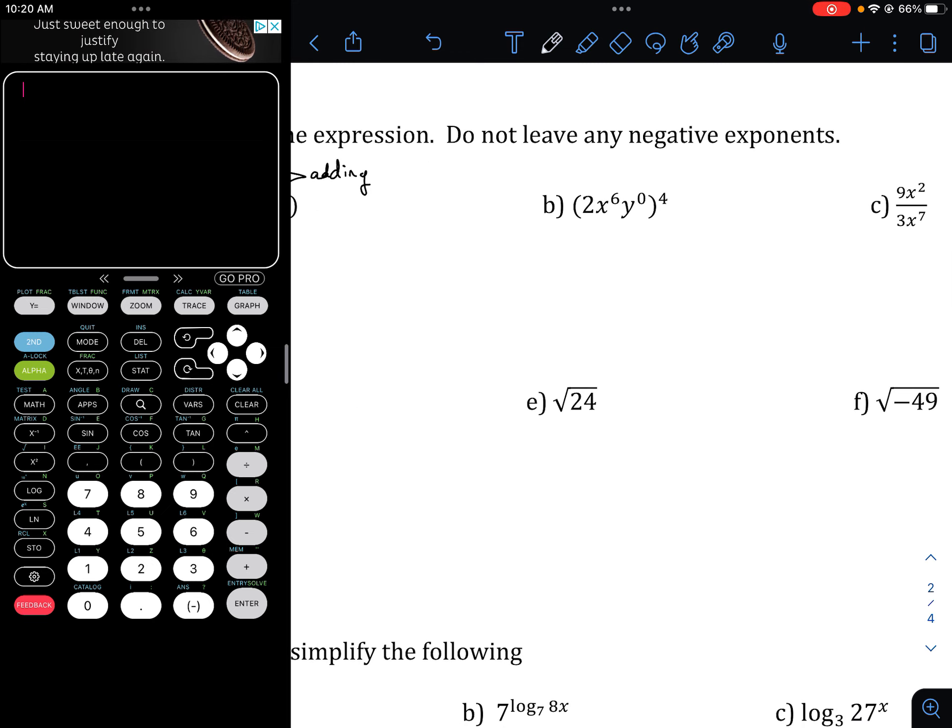This one here, distribute that 4, make sure it goes to everything. Little thing with that, that's 2 to the 4th, x to the 24th, and y to the 0, 0 times 4. Here is something to note, that anything to the 0 power is 1, so anything to the 0 power, 10 to the 0 equals 1, x to the 0 equals 1, y to the 0 equals 1, that's just 1.